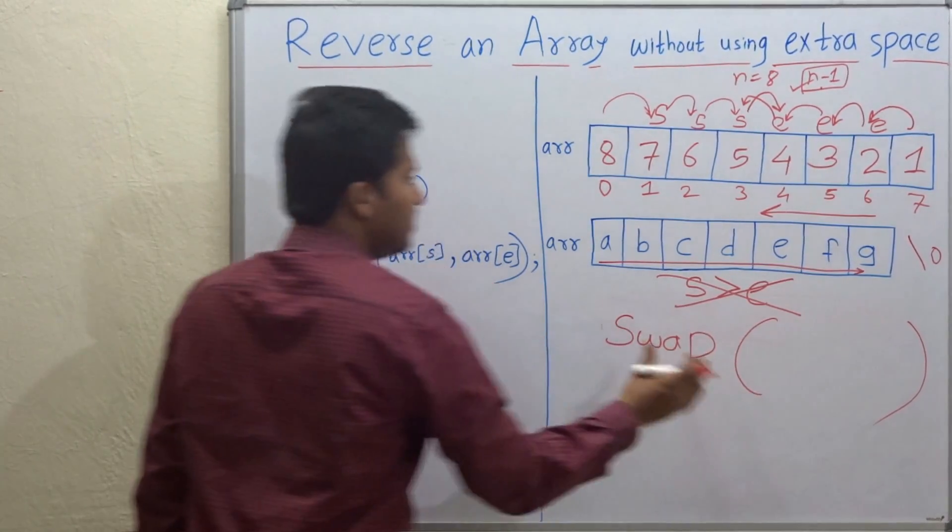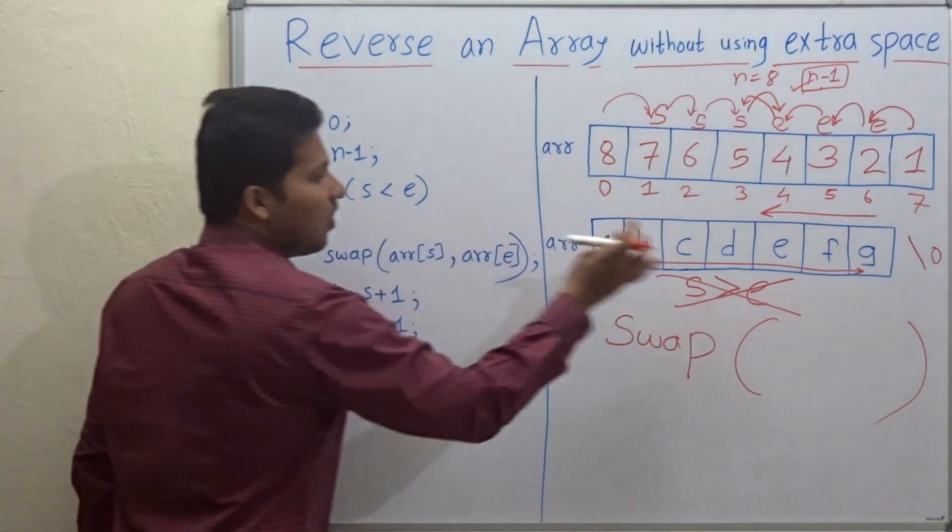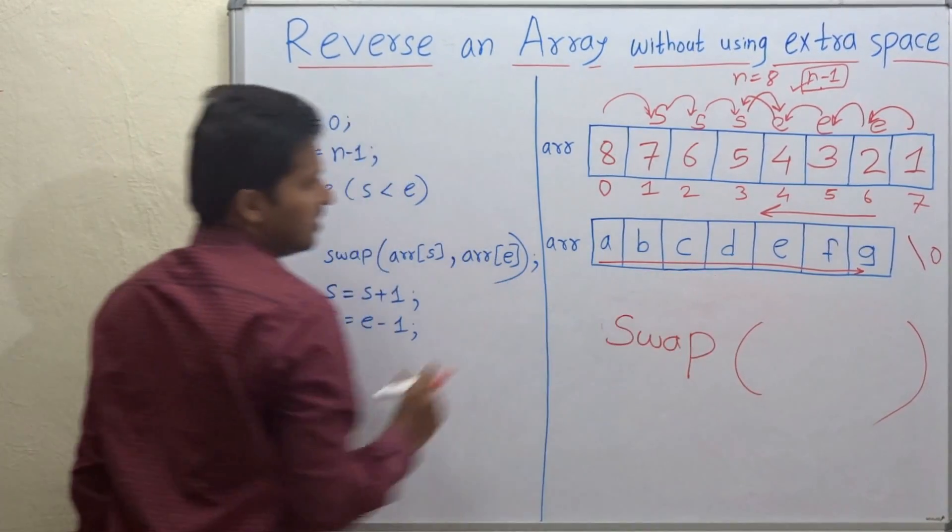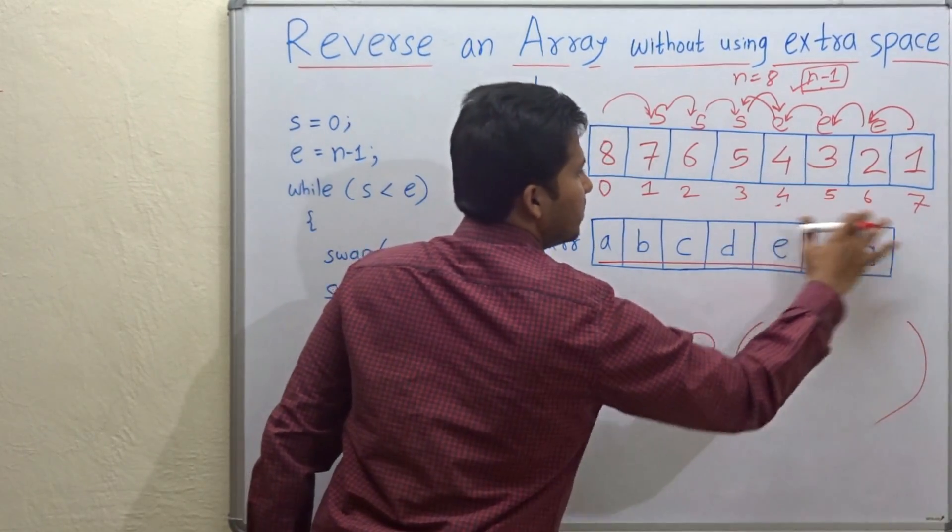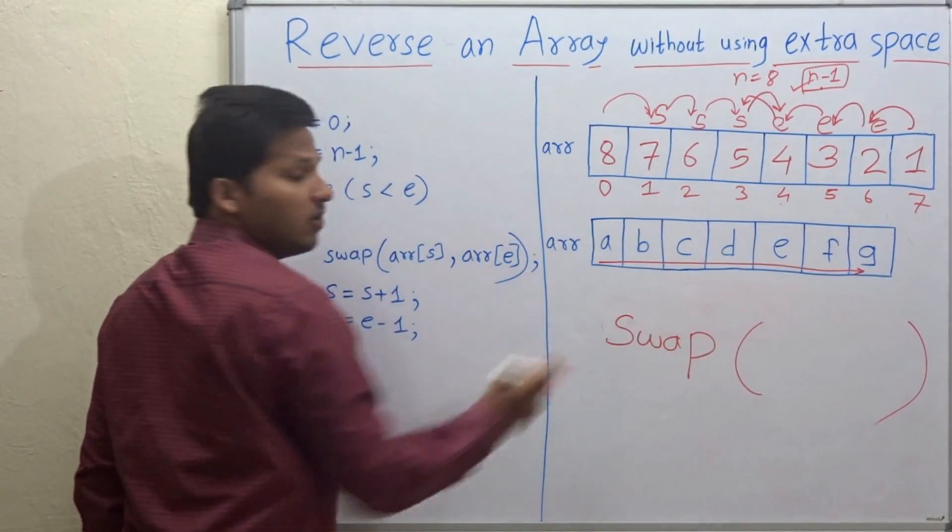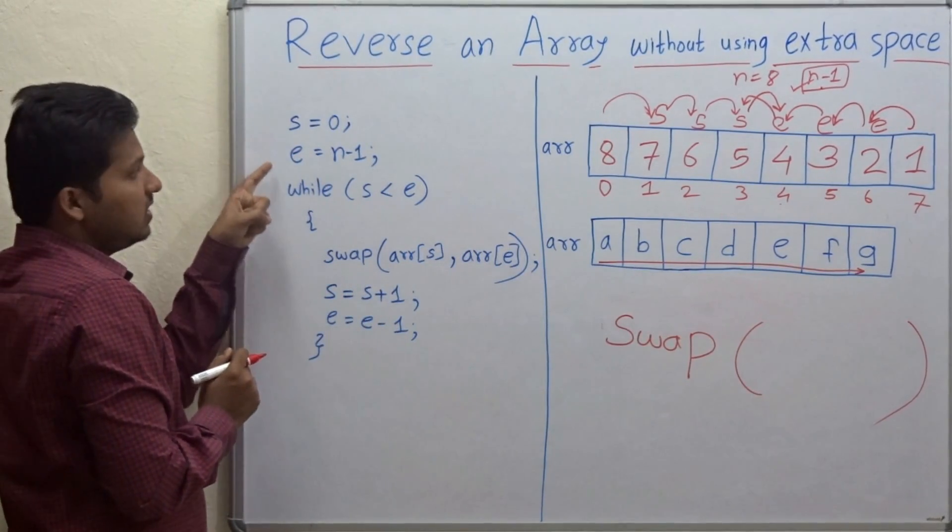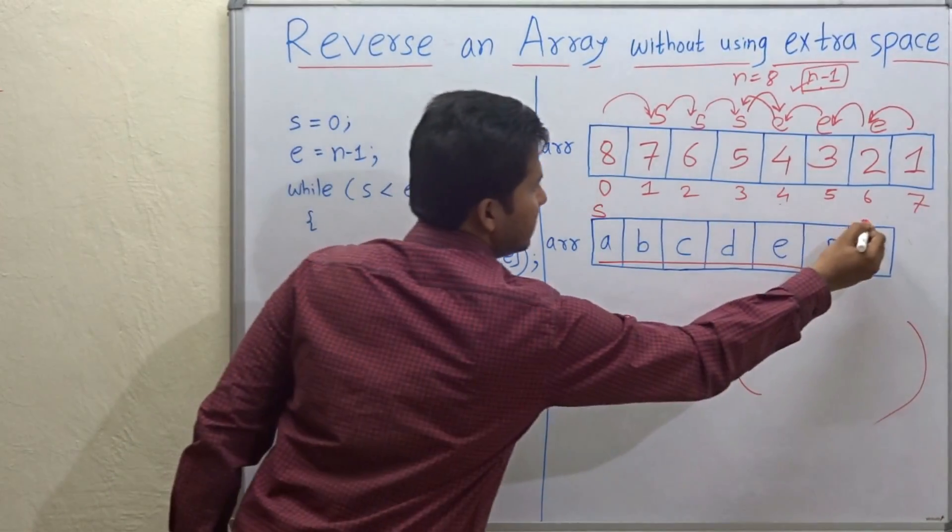So let's see the program here. This is the program and I will execute this program on this second array so that you can better understand. So let's reverse this second array of characters. So S is pointing to 0th position, E is pointing to n minus 1 position.